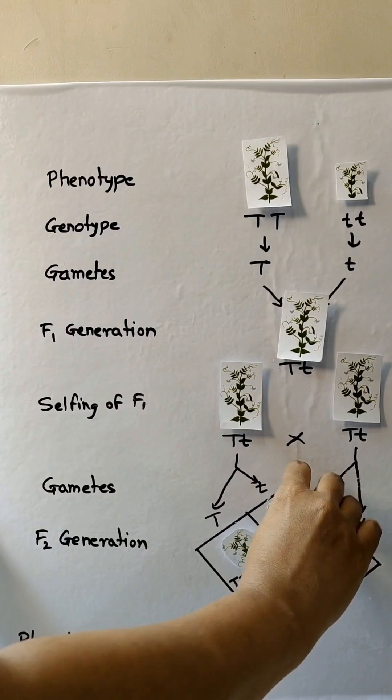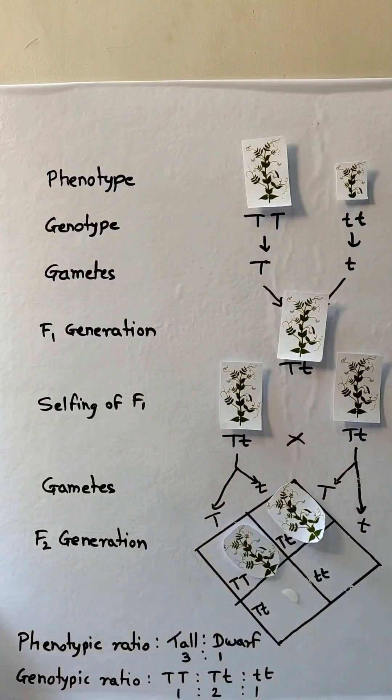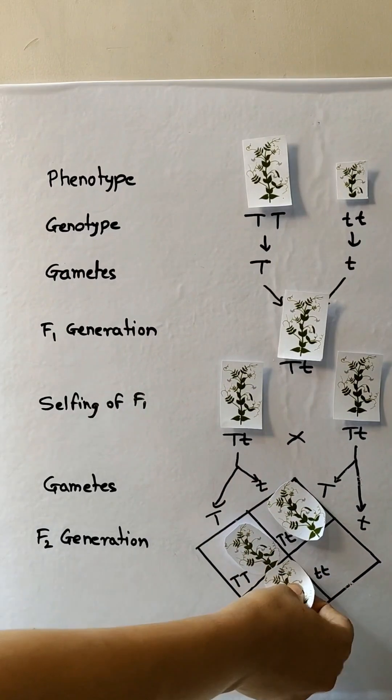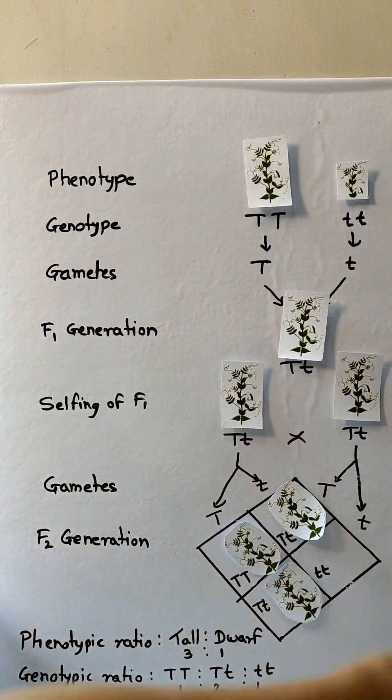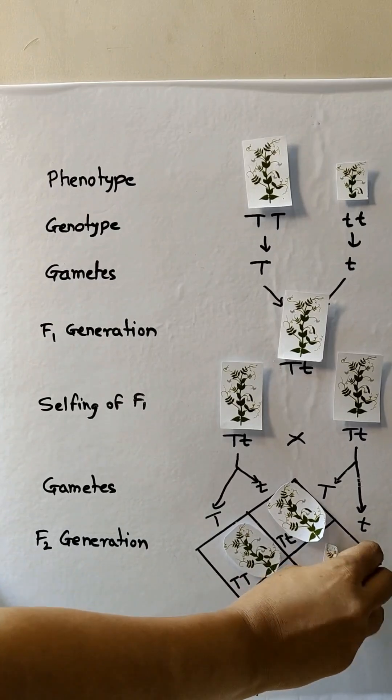The chances of offspring are four types: two heterozygous and two homozygous. That is three types of tall plants and one is the dwarf plant.